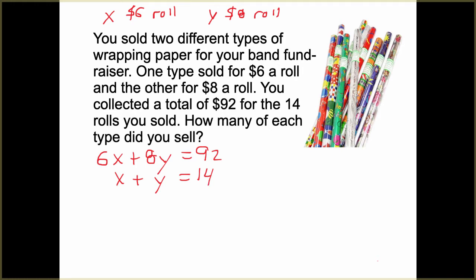From here, we just have to figure out which one we want to solve for. Do we want to solve for X or for Y? It's your preference. For this one, I like using smaller numbers. So I'm going to solve for X. We're going to subtract Y and we get X equals negative Y plus 14. We're going to plug this into the top. So we have 6, negative Y plus 14 plus 8Y has to add up to $92.